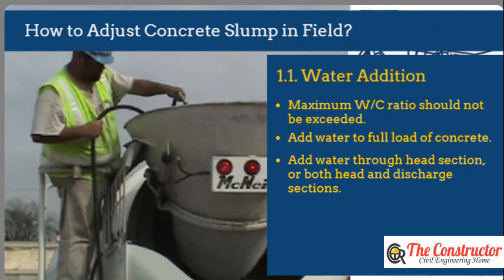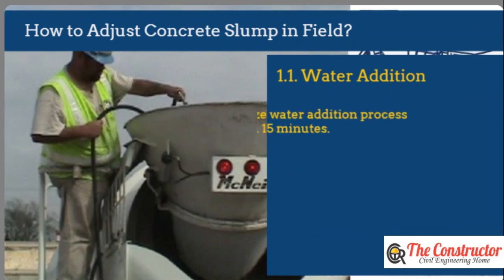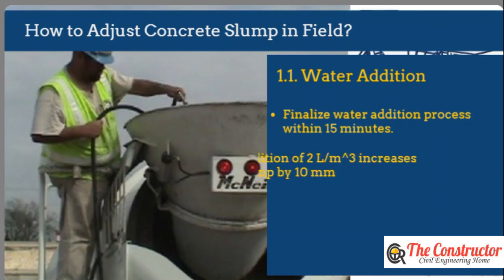After the water is added to the concrete batch, provide 30 extra revolutions at the normal mixing speed to ensure that a homogenous mixture is attained. The process of adding water to concrete in the transit mixer should be finalized within 15 minutes. It is observed that the addition of 2 liters per cubic meter of water increases the concrete slump by 10 millimeters.